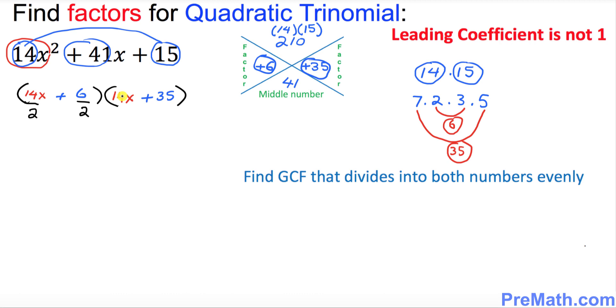In the second parentheses we want to find the GCF of this 14 and 35. And obviously the largest number is 7 that divides into both of them at the same time. Let's go ahead and simplify this one. So that's going to be 7x plus 3 and the second parentheses could be simplified to 2x plus 5.